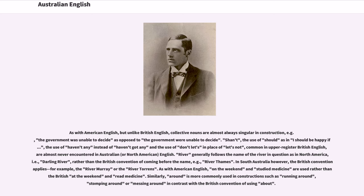River generally follows the name of the river in question as in North America, that is, Darling River, rather than the British convention of coming before the name, for example, River Thames. In South Australia however, the British convention applies, for example, the River Murray or the River Torrens.